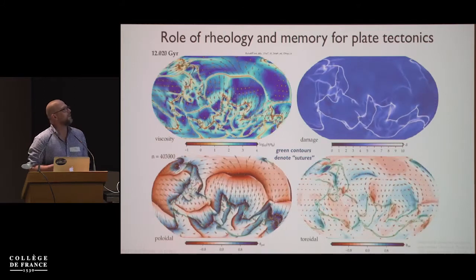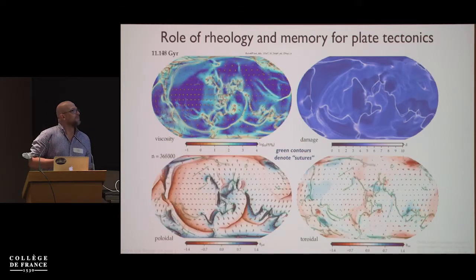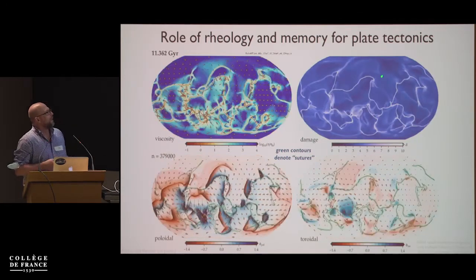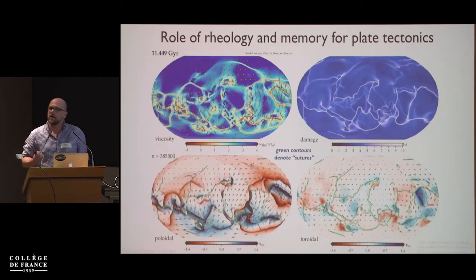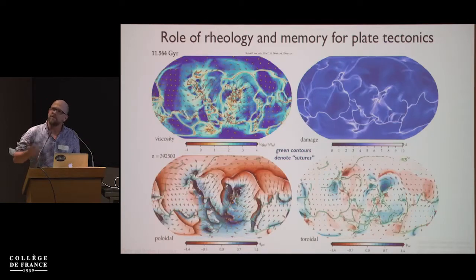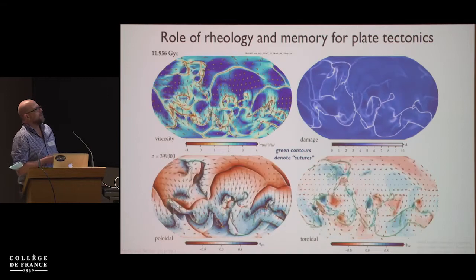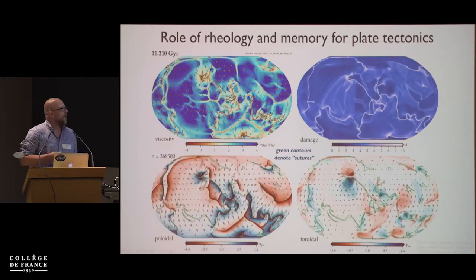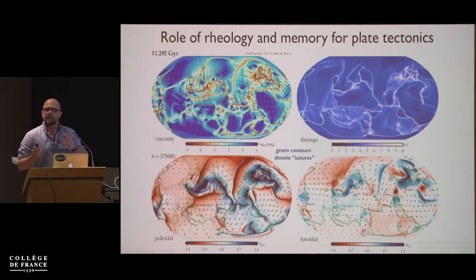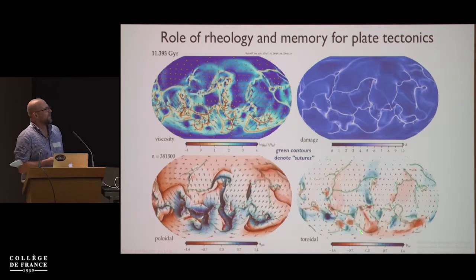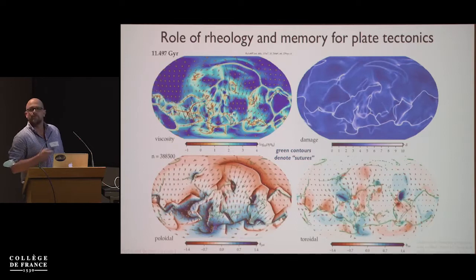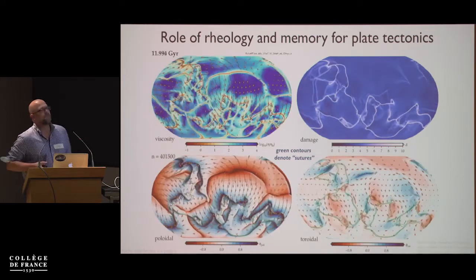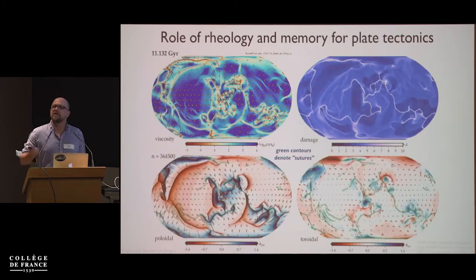What is shown here is a global viscoplastic computation of something akin to some version of plate tectonics, with continents conspicuously absent, where Lucas Fuchs has implemented this damage rheology where weakening happens as a function of accumulated strain that feeds back into the rheology. What you get are these remnants of past deformation shown in green contours on top of the poloidal and toroidal velocity fields. Those zones of weakness get convected around — plate boundaries are reorganizing — and in particular, strike-slip toroidal motion likes to happen along these pre-existing weak zones.